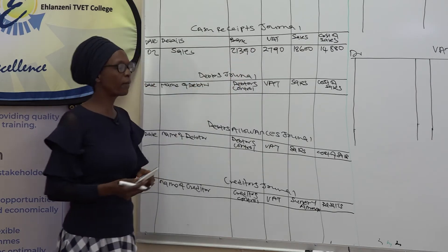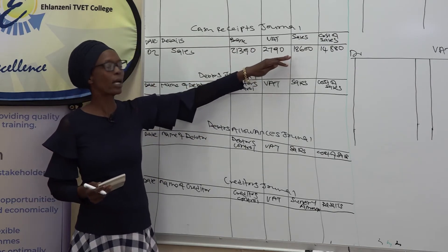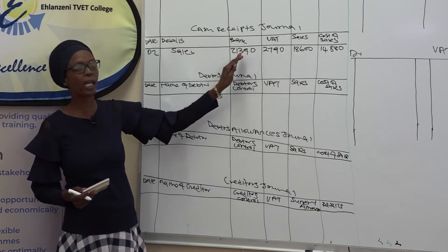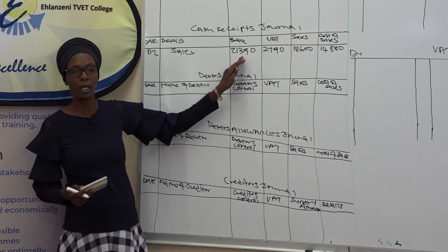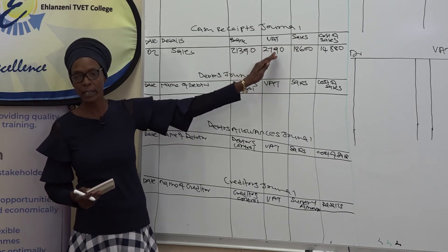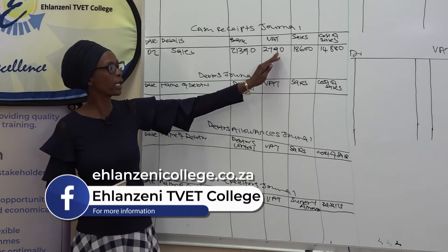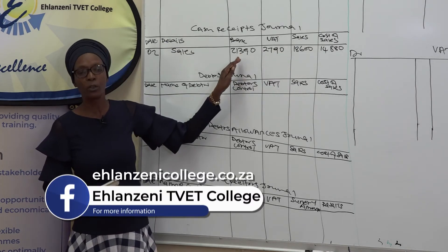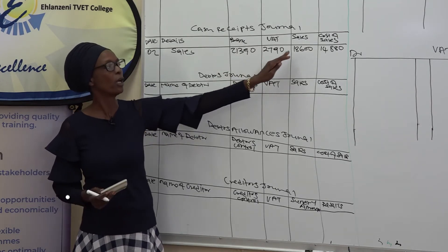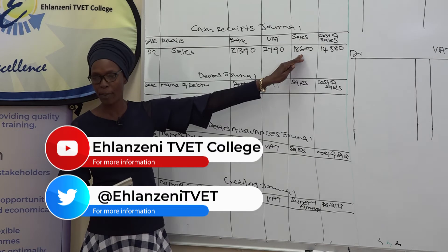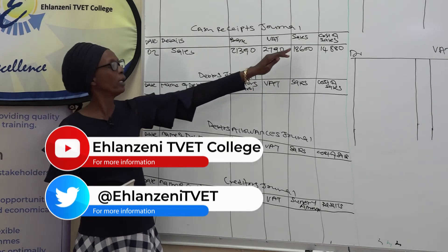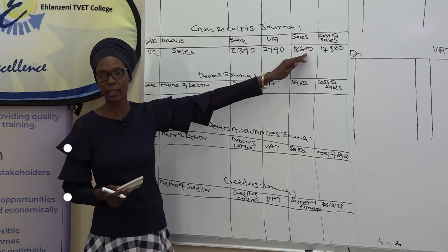Remember, if the amount was inclusive of VAT, we would start recording it in the bank column and calculate the VAT using the inclusive formula. Then to get the sales column, we subtract the VAT from the bank amount. But because we were given an exclusive amount, we started with the sales column, calculated the VAT, and added it to get the bank total.